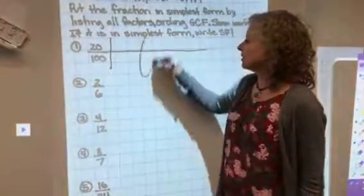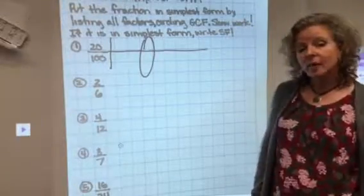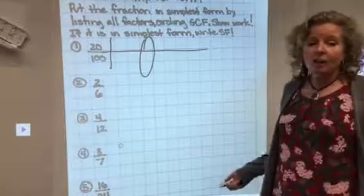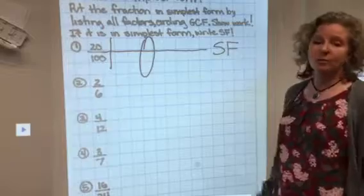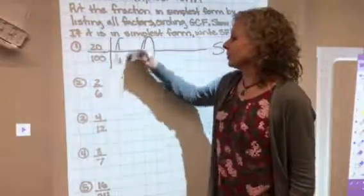Once you list all the factors, you're going to circle the greatest common factor. If the greatest common factor is 1, you're just going to write simplest form off to the side after you would circle the one.